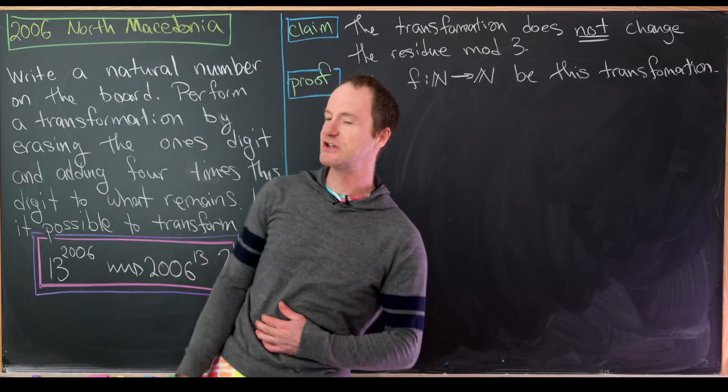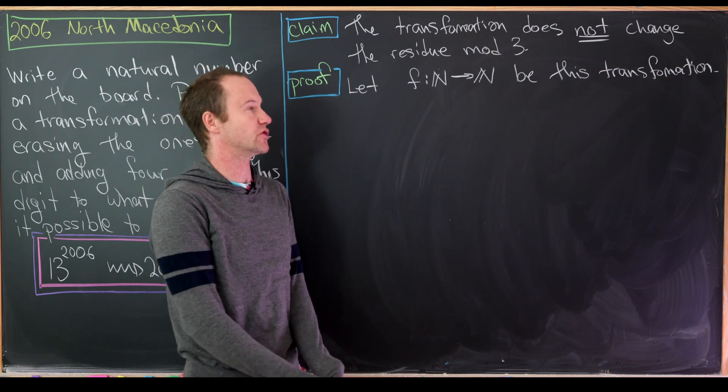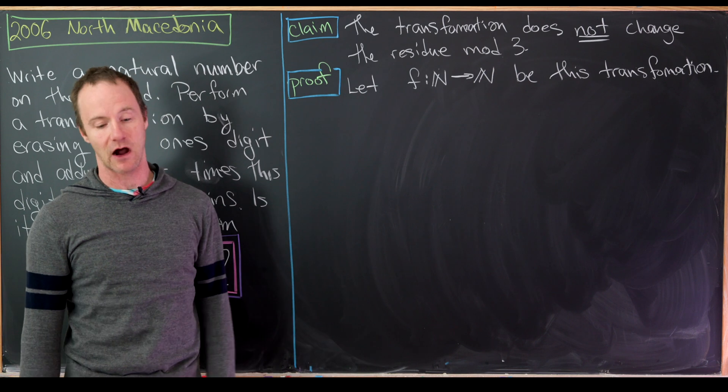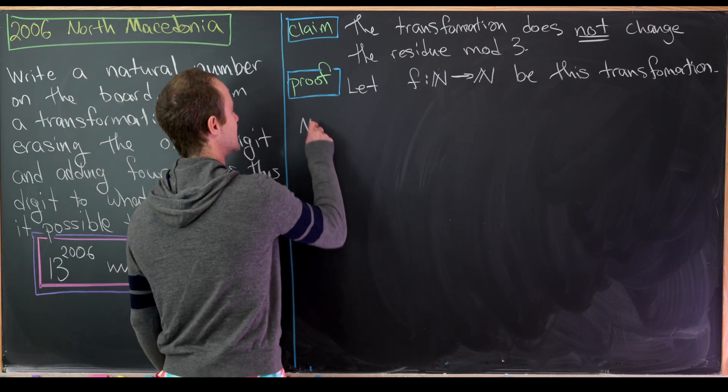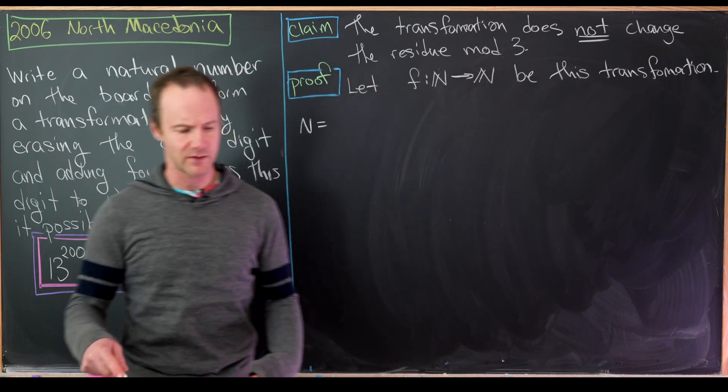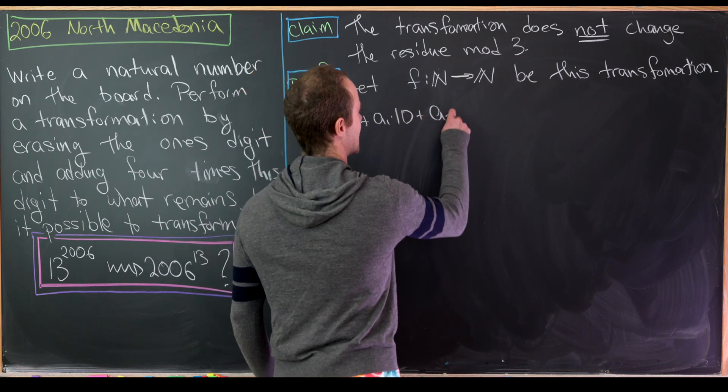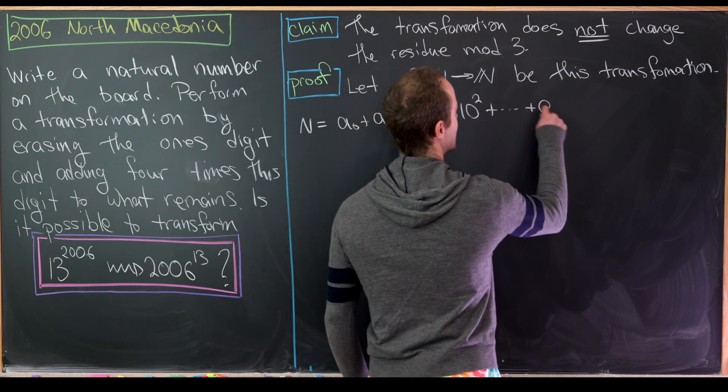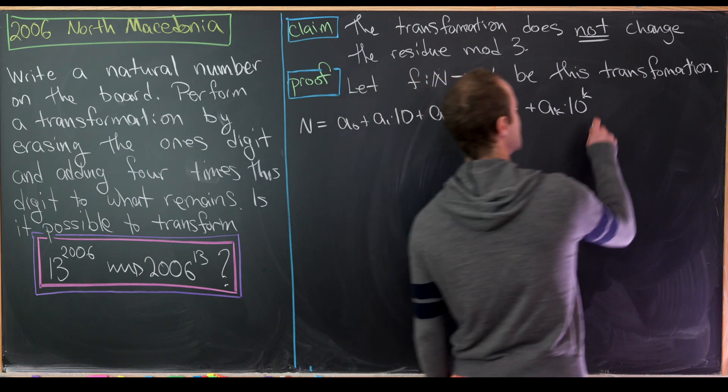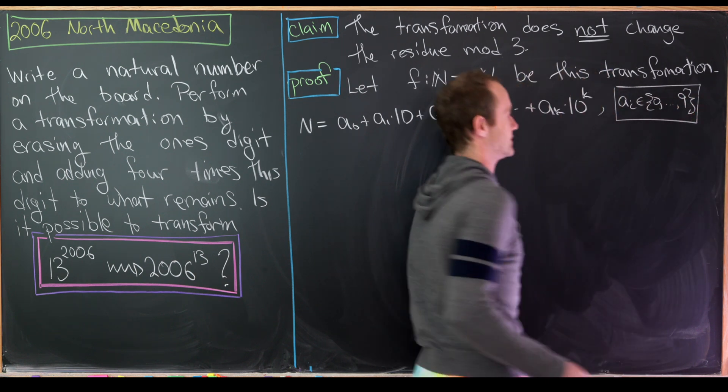Via some experimentation on the transformation we came up with the following conjecture which we'll now prove: the transformation does not change the residue mod 3. Let's introduce some notation. Let's say f is a function from natural numbers to natural numbers and it is our transformation. Next let's take a number n which is a natural number, but because it has to do with taking off the ones digit we probably want to expand it in decimal notation. So we'll write this as a₀ + a₁×10 + a₂×10² + ... + aₖ×10^k. The ones digit is clearly the a₀ term, and the aᵢ are from the set 0 to 9. This is the base 10 expansion.